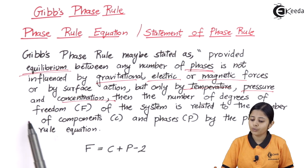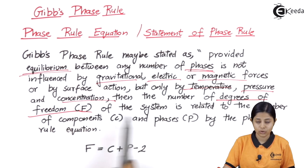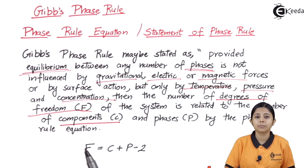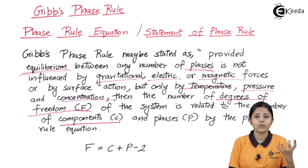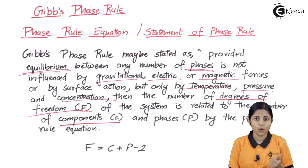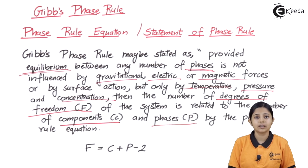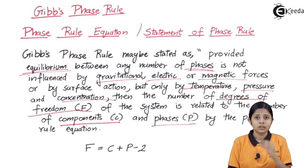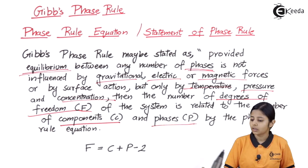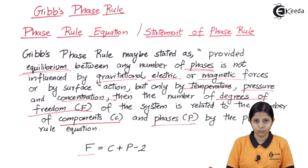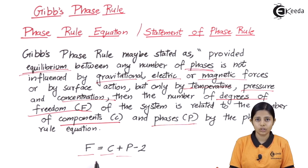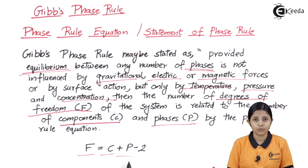The number of degrees of freedom — always remember, degrees of freedom is represented by F — of the system is related to the number of components and phases. Components are the reactants which combine together to form products; they can be either in elemental or compound form, atomic or molecular. The phases are the different kinds of phases in which the components and products exist — solid, liquid, or gaseous. The rule is given as F equals C plus P minus 2, where F stands for degree of freedom, C for components, and P for phases.